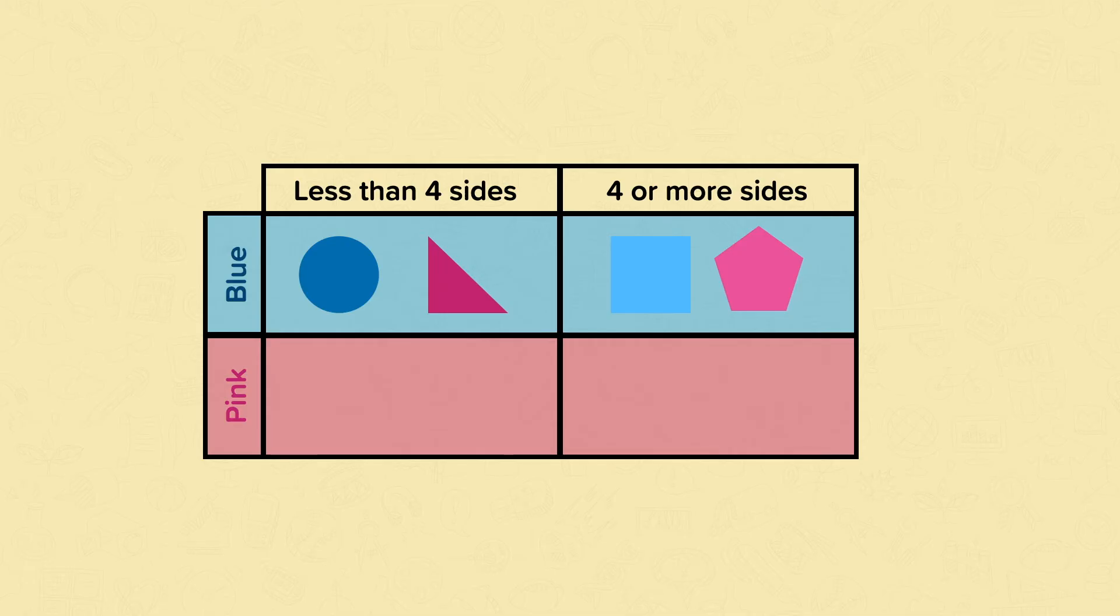The triangle needs to stay in the 'less than four sides' column but needs to move to the pink row. The pentagon needs to stay in the 'four or more sides' column but also needs to move to the pink row. Now the shapes are correctly sorted within this Carroll diagram.